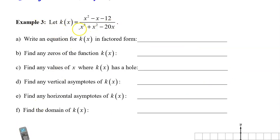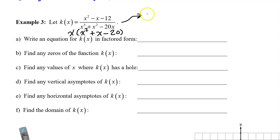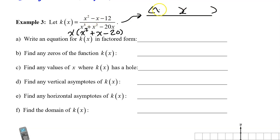Example 3, new function k of x — let's write this in factored form. I noticed that in the denominator we have x's on every term, so let's factor out the common factor of x before we go any further. That gives us x squared plus x minus 20. Now we can go ahead and factor. In the numerator, this trinomial will factor as a binomial times a binomial. x squared will be x times x.